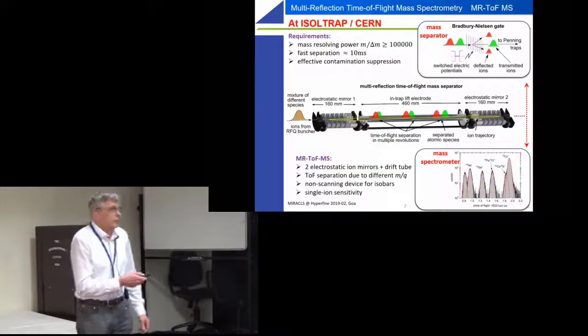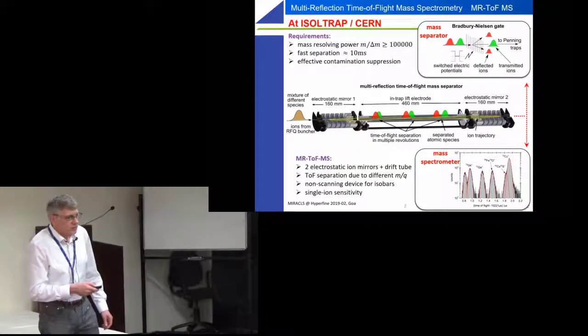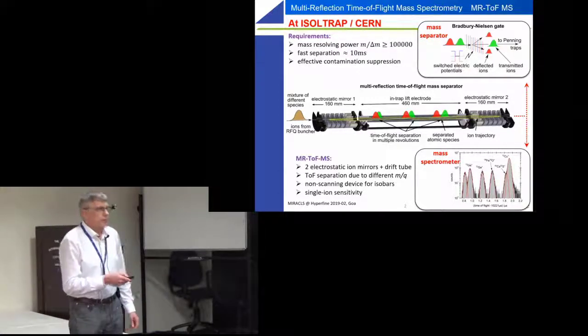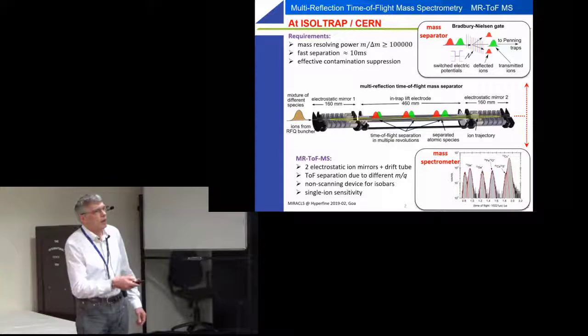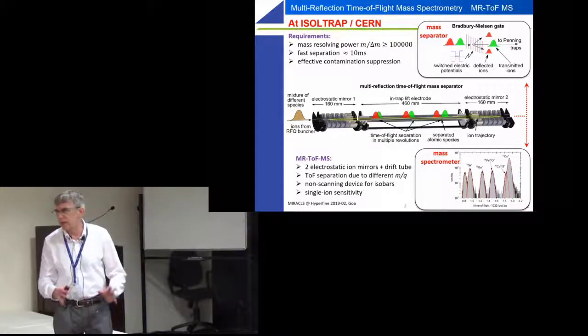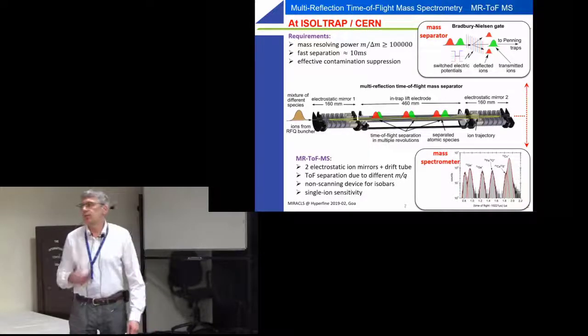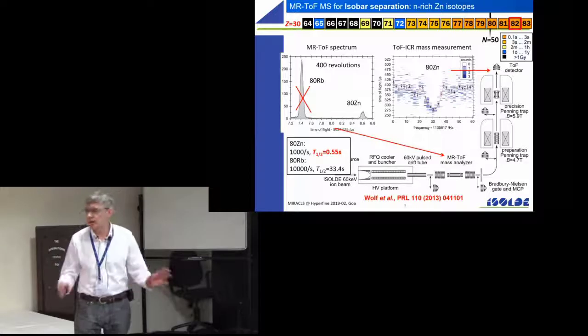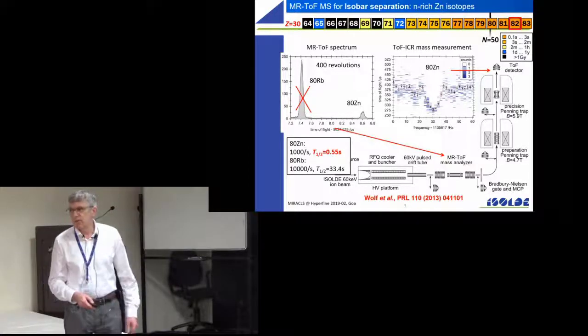We can do mass measurements. We initially did that for separating masses. So if they come at different times through a gate, we can use that gate to let only the one through that we want. And then you can do even more precise measurements in Penning traps.